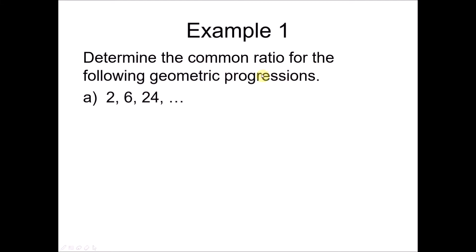Now, determine the common ratio for the following geometric progression. To find the common ratio r, we use the formula r equals the second term over the first term, or any term divided by the previous term. In this case the second term is 6 and the first term is 2, so 6 divided by 2 equals 3. This means 2 times 3 gives 6, and 6 times 3 gives 18.